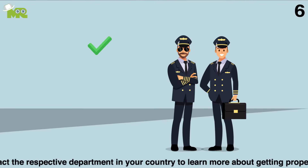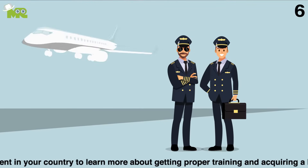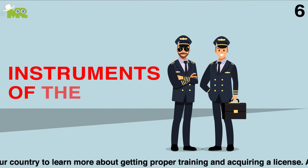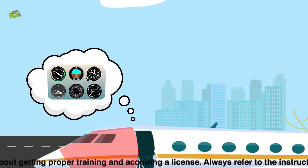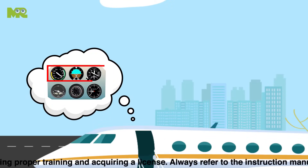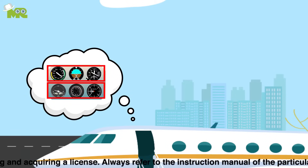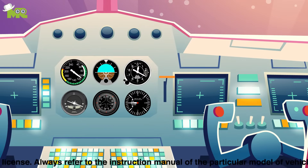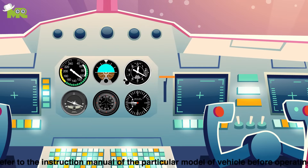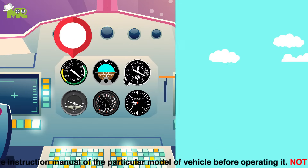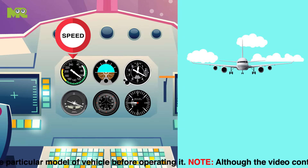Sixth, it's absolutely essential that you familiarize yourself with the instruments of flight. You'll find six primary flight instruments located along two horizontal rows. The first instrument is on the top left of your console — the airspeed indicator, which shows the speed of the aircraft in nautical miles per hour.